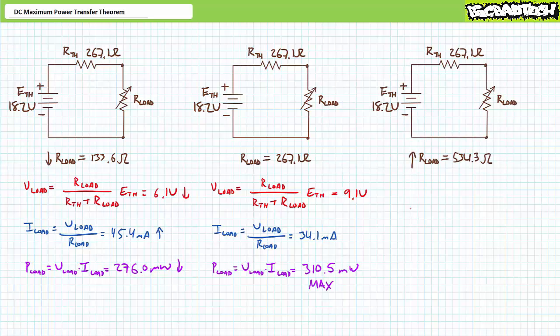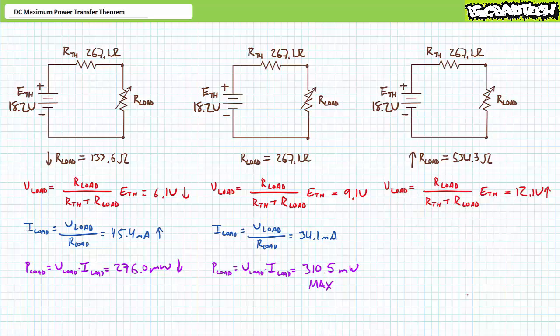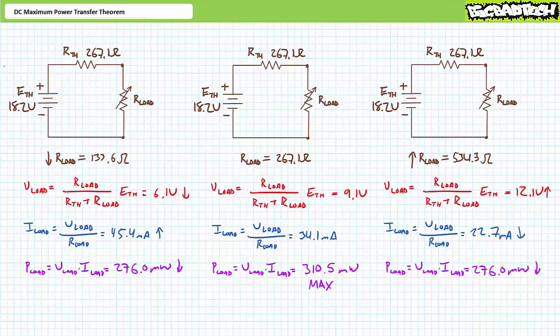Let's crank our load up to 534.3 ohms — twice the Thevenin's equivalent resistance. Applying the voltage divider rule, the load experiences an increased 12.1-volt drop. Ohm's law gives a current of 22.7 milliamps through the load. The power equation shows the load dissipates 276 milliwatts — also less than maximum power conditions. At these conditions, our load, being a larger resistance, drops more voltage but draws less current, and therefore dissipates less power.